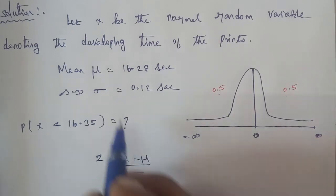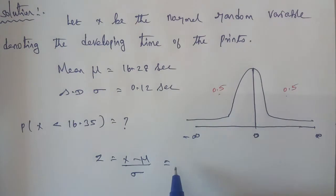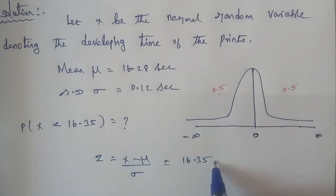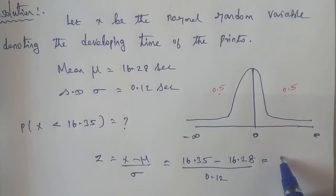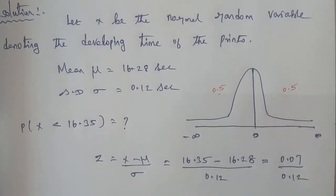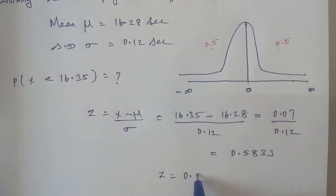Substituting the values: Z = (X − μ) / σ, where X = 16.35, μ = 16.28, and σ = 0.12. So Z = (16.35 − 16.28) / 0.12 = 0.07 / 0.12 = 0.58.